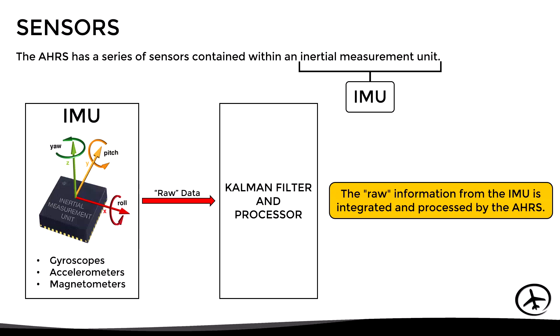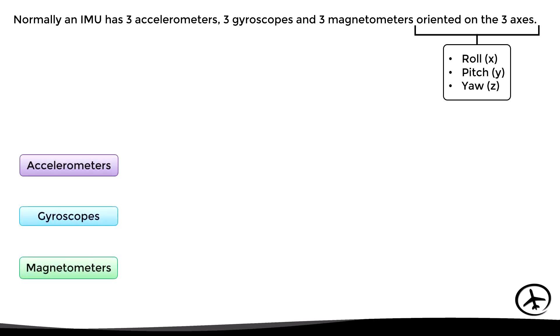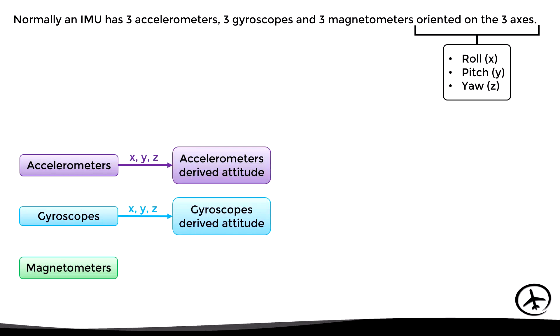Let us now take a closer look at how the IMU detects changes in attitude and heading. Normally this unit has three accelerometers, three gyroscopes, and three magnetometers oriented on three axes — X, Y, and Z — corresponding to the movements of roll, pitch, and yaw. There is one accelerometer for each axis, which allows calculating the accelerometer-derived attitude. Similarly, there is one gyroscope for each axis, which allows calculating the gyro-derived attitude, and one magnetometer for each axis, which allows calculating the magnetometer-derived heading.